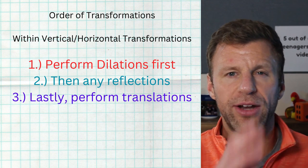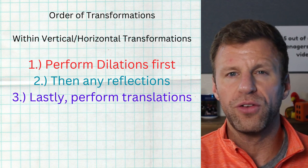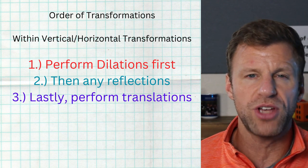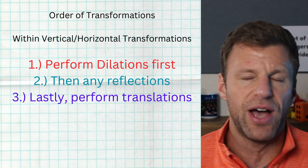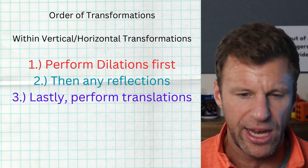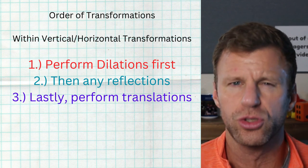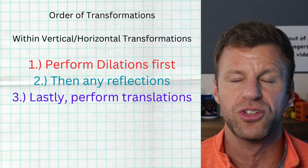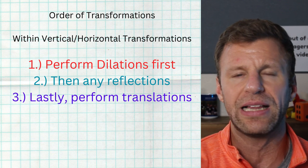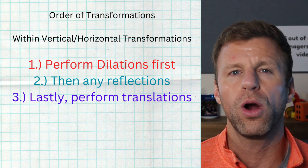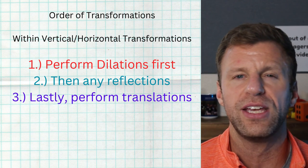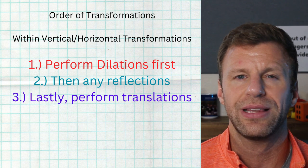Again, if you handle all the vertical first, that's fine — all the horizontal next, that's fine, or vice versa. But let's just say you're gonna handle the horizontal transformations first. Then you do have to go in order: dilations, then reflections, and finally the translations.